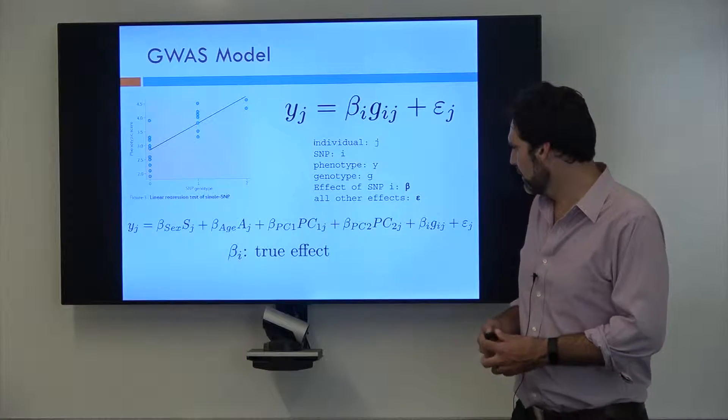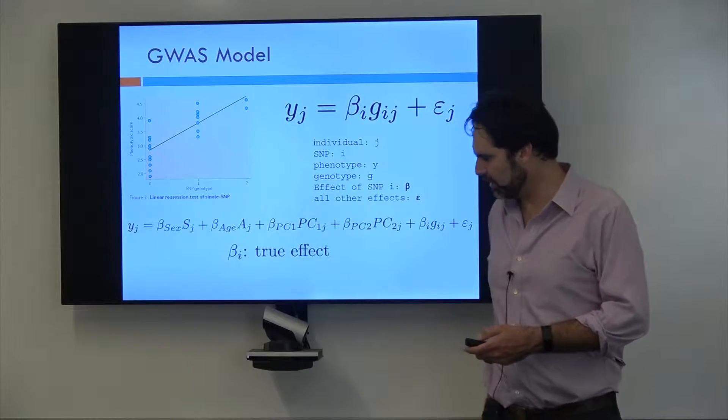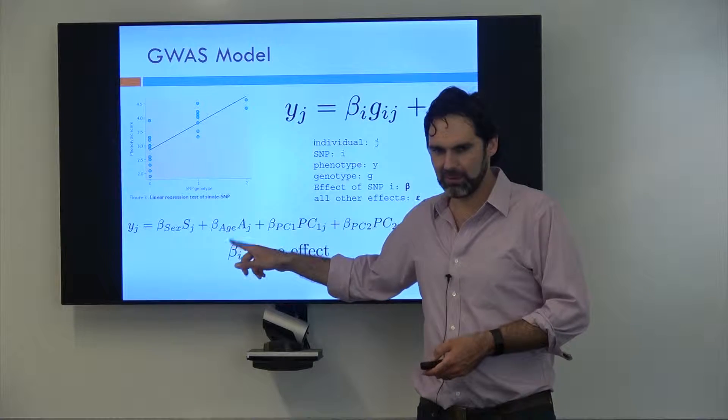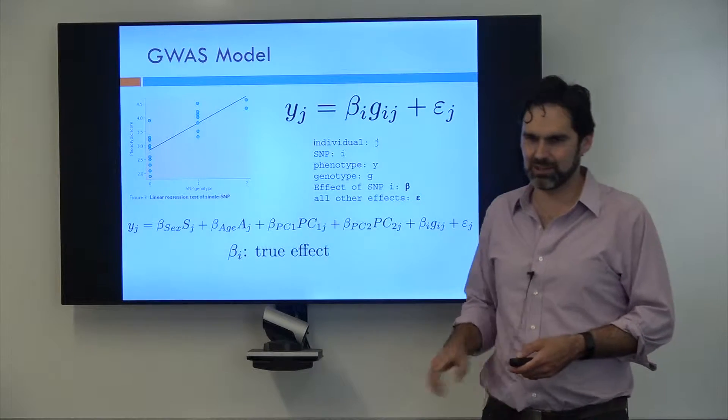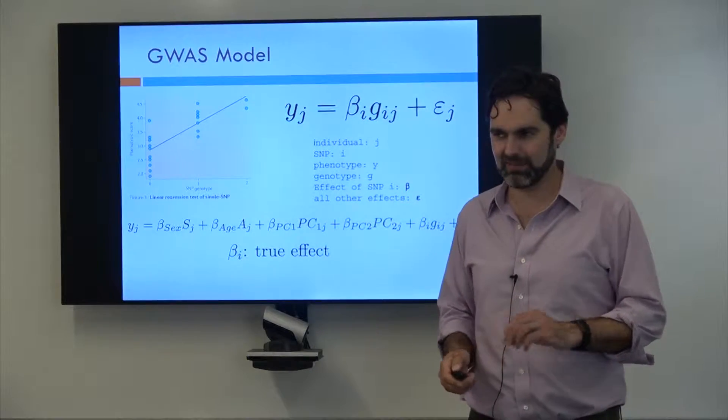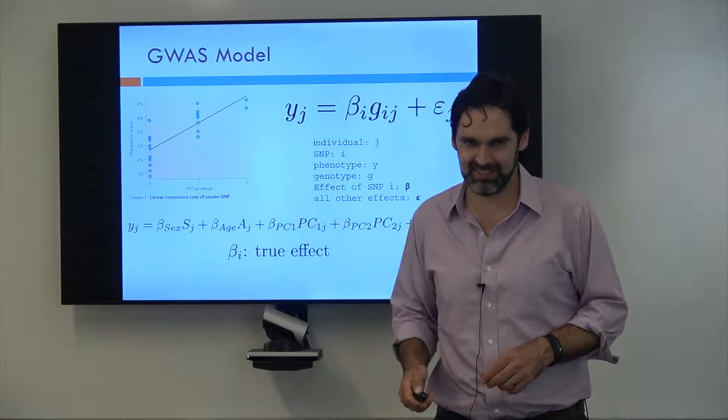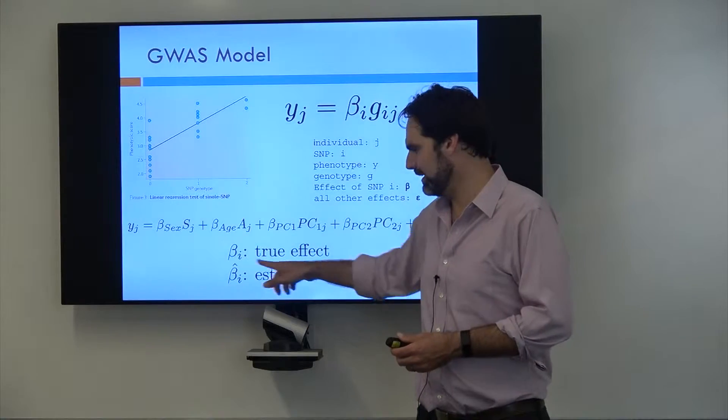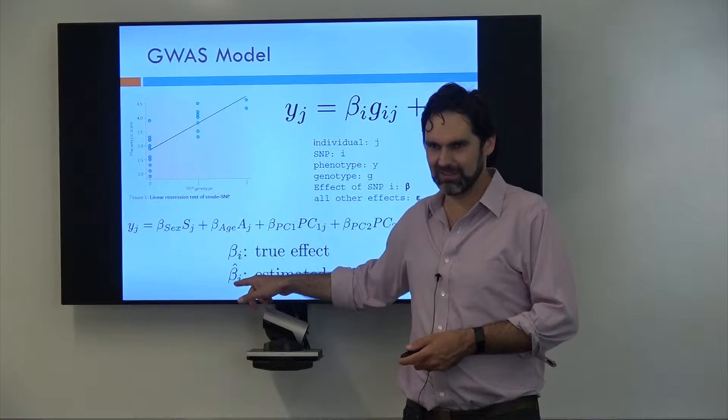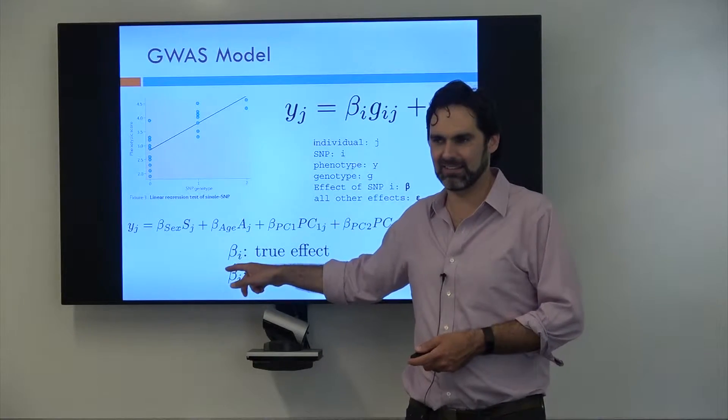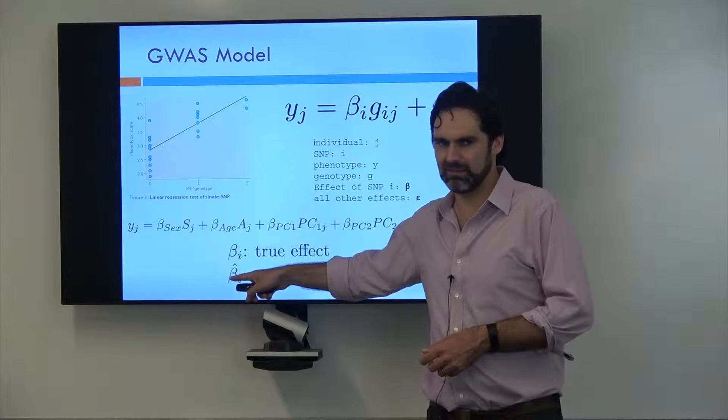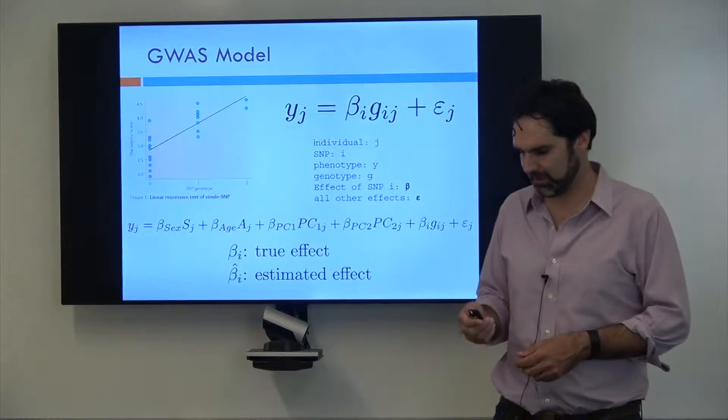From this there's some terminology we need to learn. First, the true effect. If you ever see a beta with an i and there's no hat on top, it's representing the true effect. Unless you're doing a simulation study, you will never know what the true effect is. You will only ever have an estimate of the true effect, which should, if people are using good notation, have this hat on top of it. All this means is that this is an estimate for what this value is in reality.